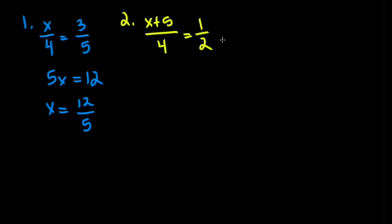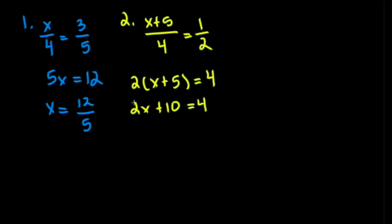Let's try another problem — again solving for x using the means-extremes property. We multiply 2 times (x plus 5) equals 4. Using the distributive property: 2x plus 10 equals 4. Combining like terms: 4 minus 10 equals negative 6, so 2x equals negative 6. Dividing both sides by 2, x equals negative 3.